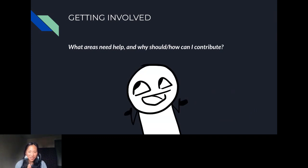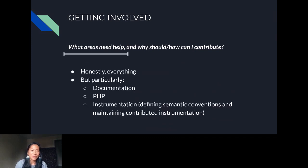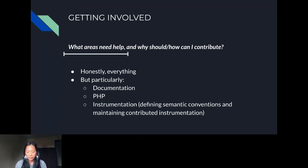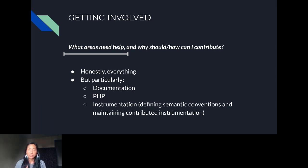What areas need help? Honestly, everything could use some help — there is so much to do within the community. I spoke with Ted Young, co-founder of OpenTelemetry, and documentation is in need of a lot of love — if you want to do non-code contributions, that's a great way to get involved. The PHP SIG also could use a lot of help, and specifically defining semantic conventions and maintaining contributed instrumentation are areas that need the most help.